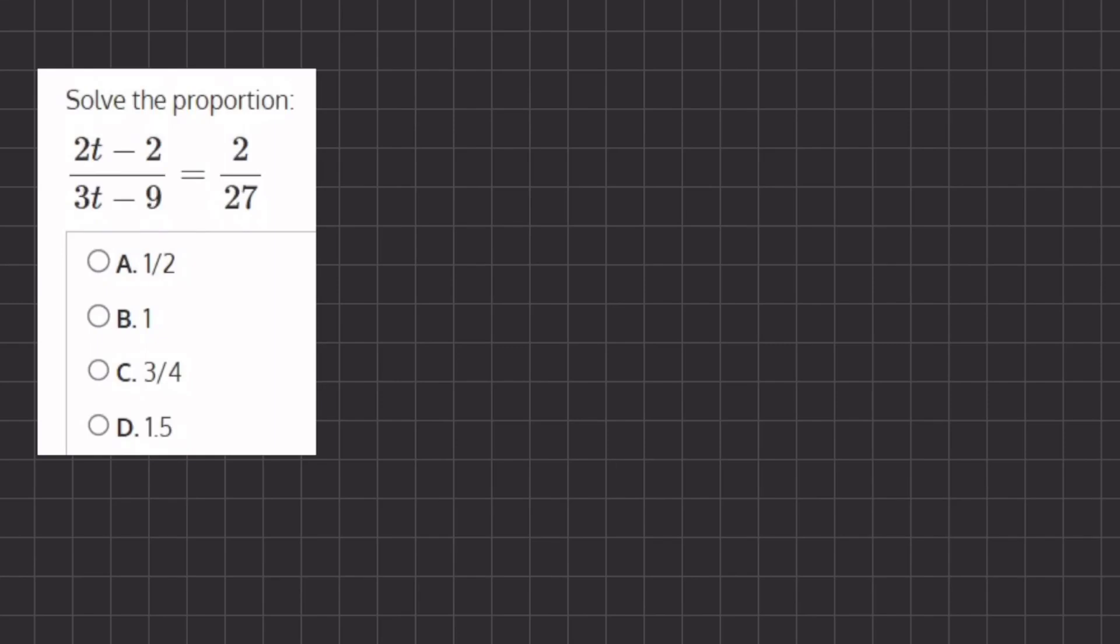In this problem, to solve the proportion we're going to cross multiply by multiplying the opposite denominator by the opposite numerator. So we have 27 times (2t - 2) equals 2 times (3t - 9).